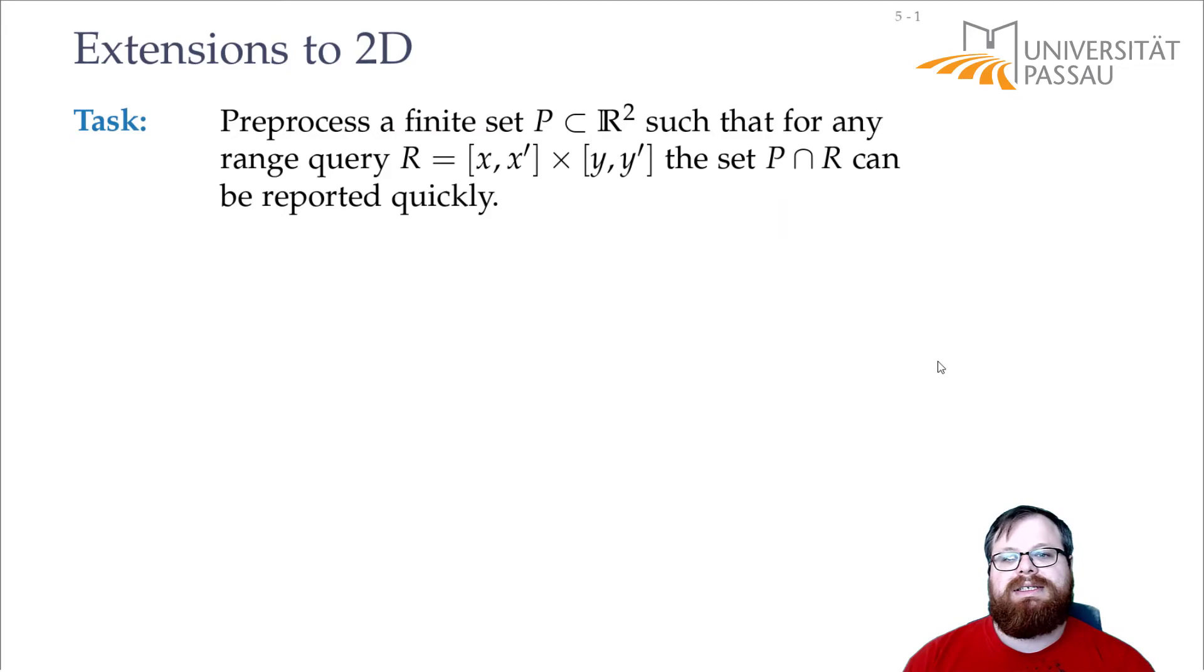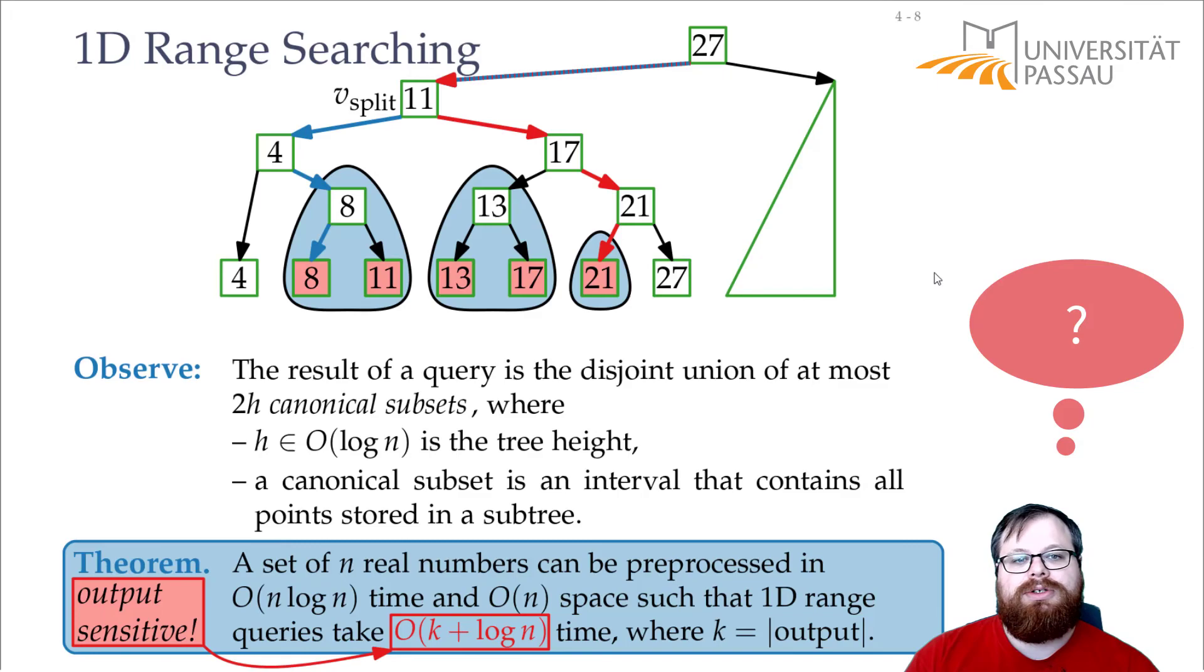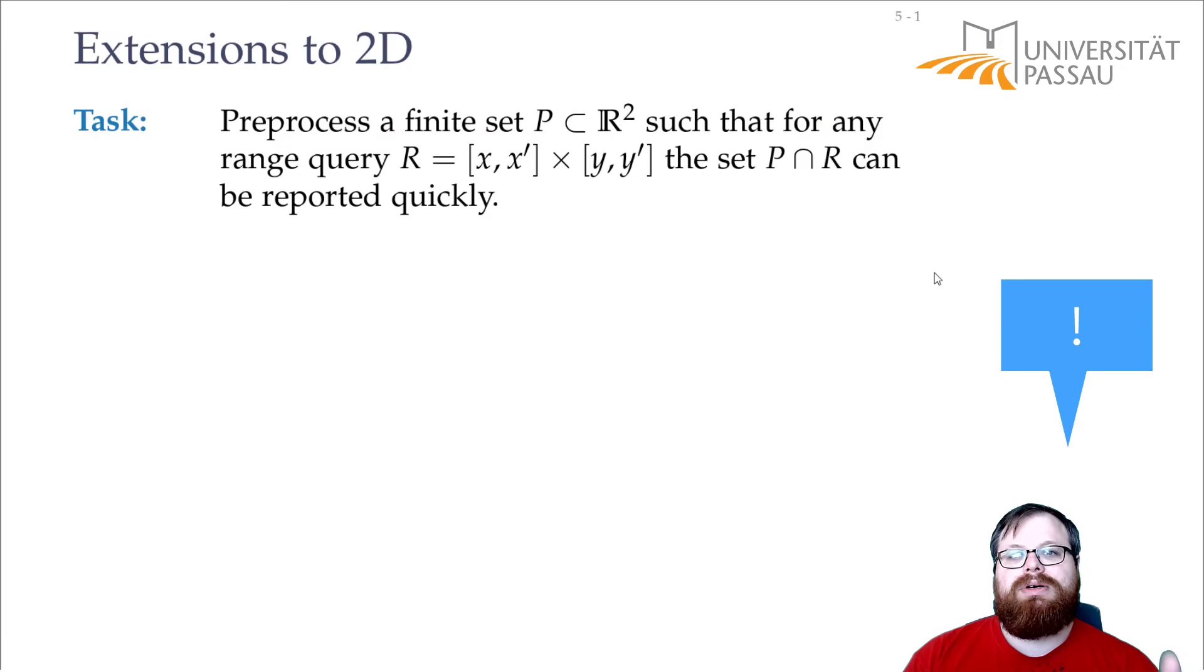And now that we have a solution for one dimension, we want to extend it to two dimensions. And now we have points in 2D, and we have a 2D orthogonal range query, and we want to report the set of points inside this query. Do you have ideas how we can take this solution and extend it to 2D?